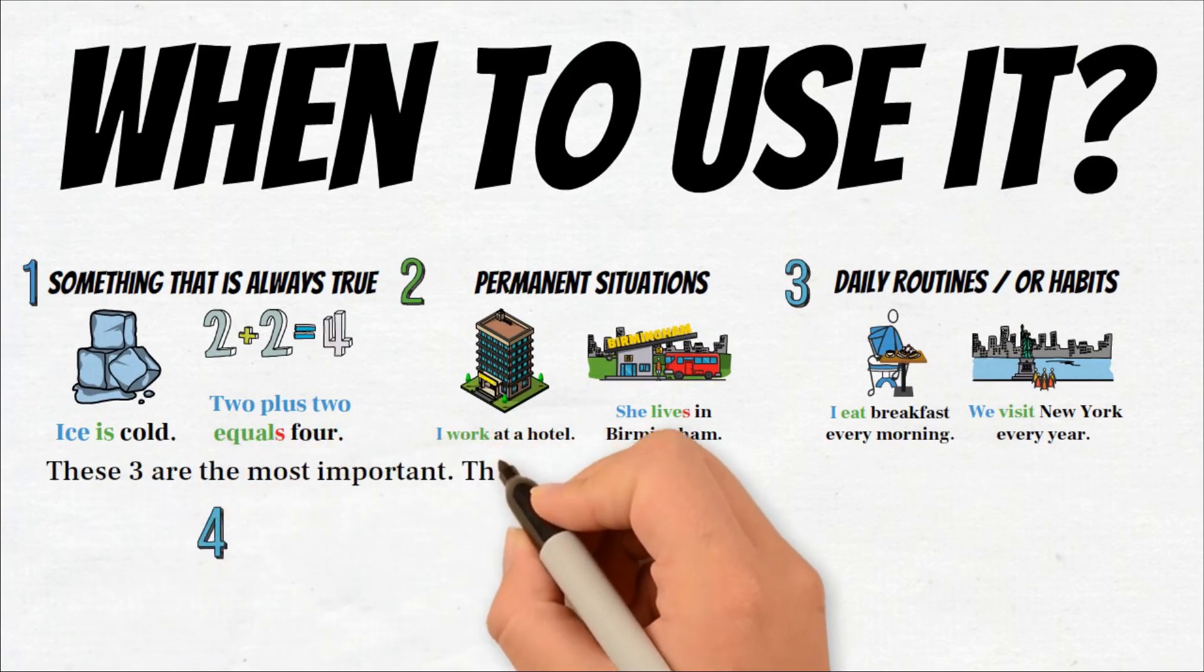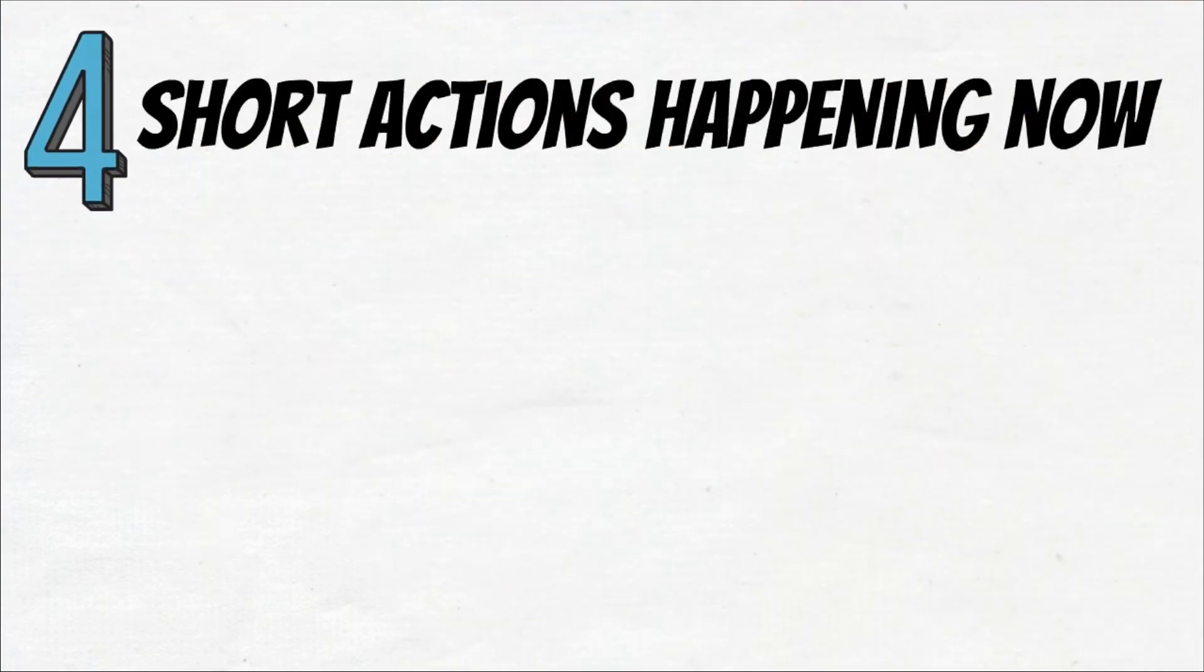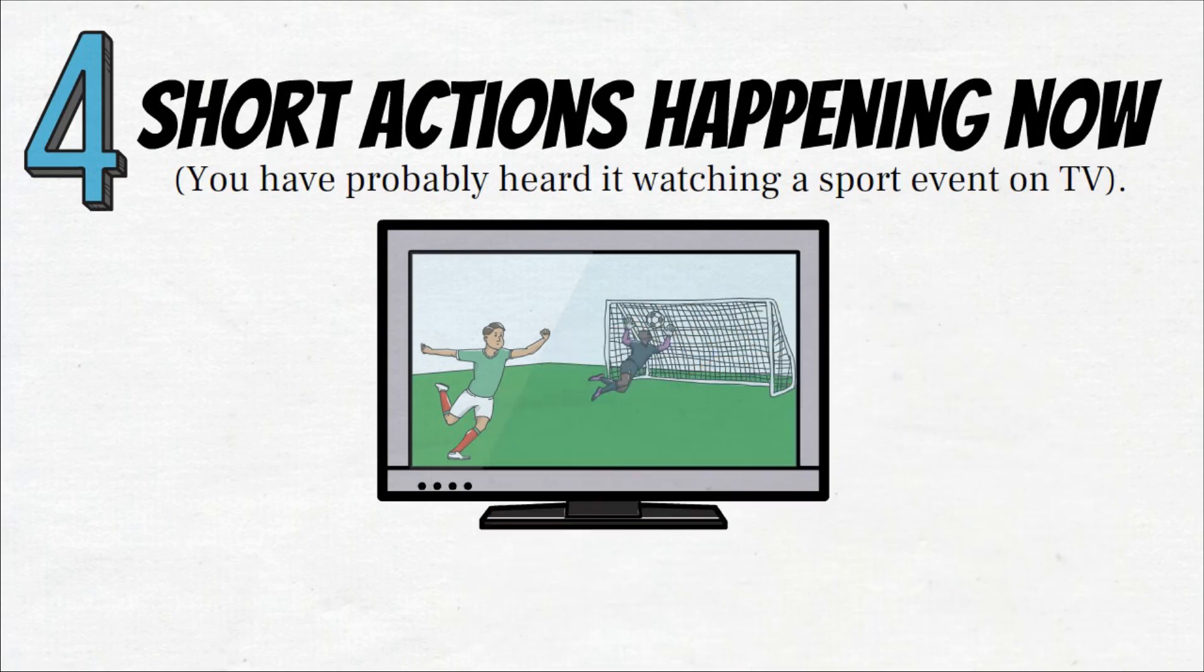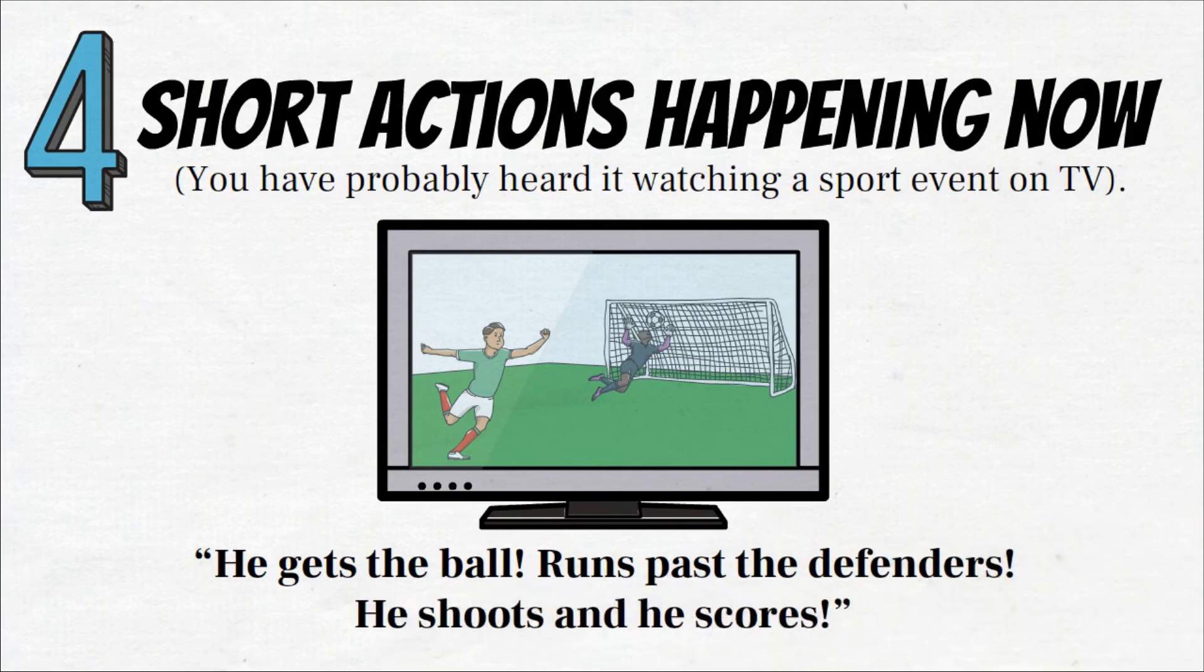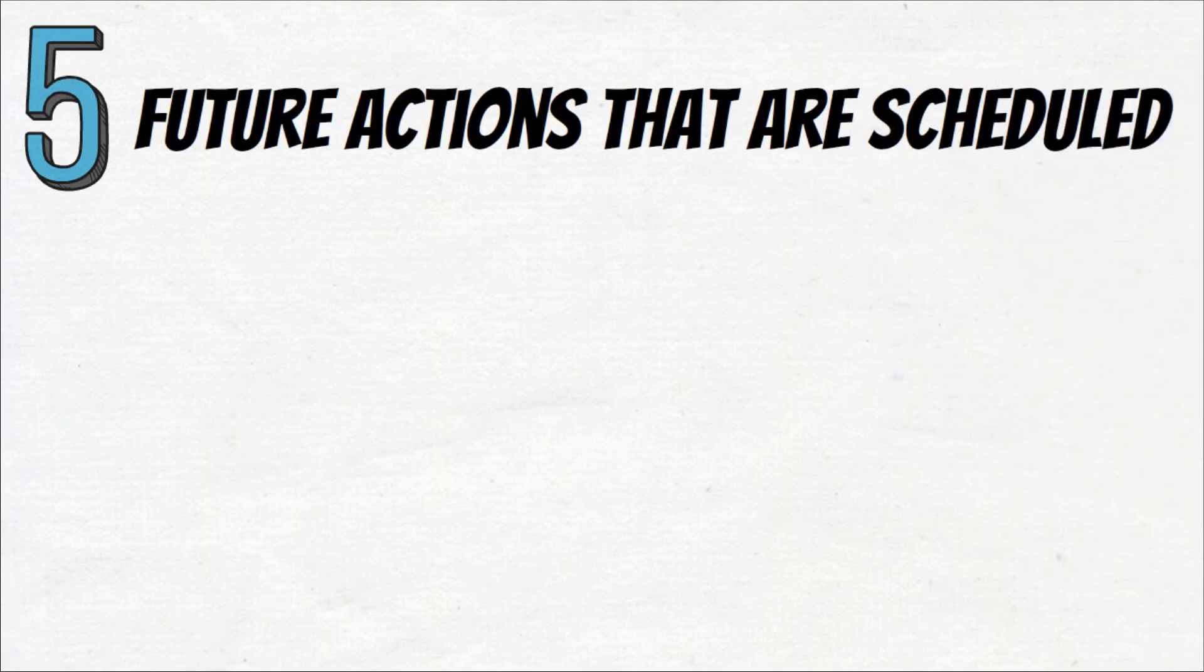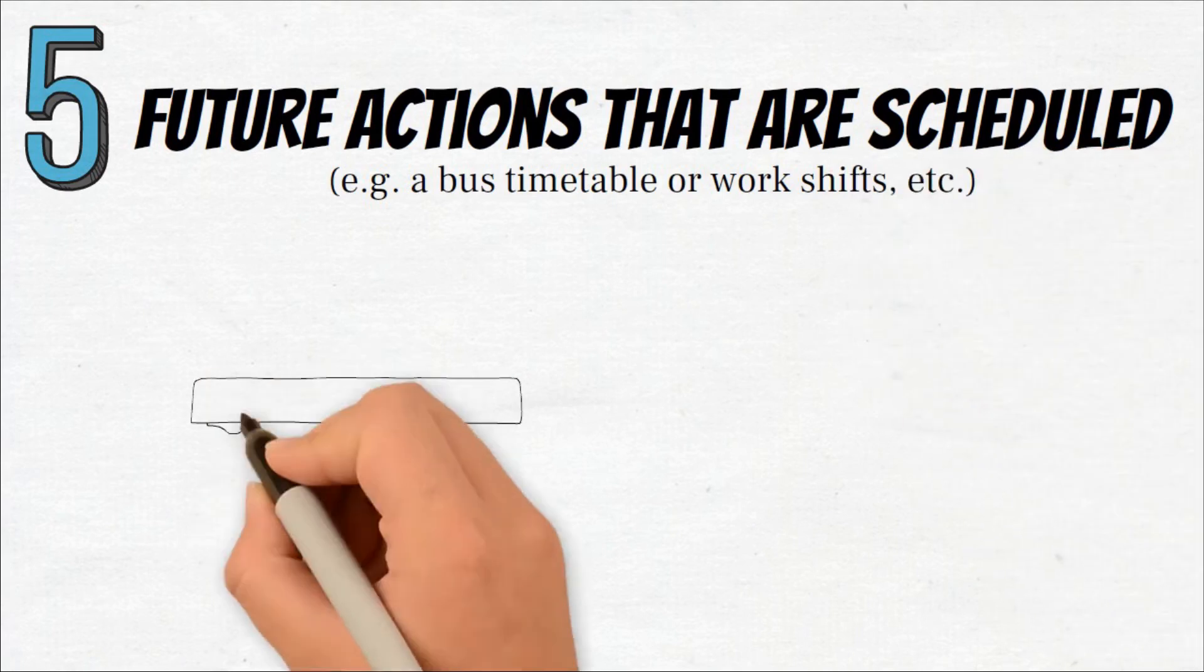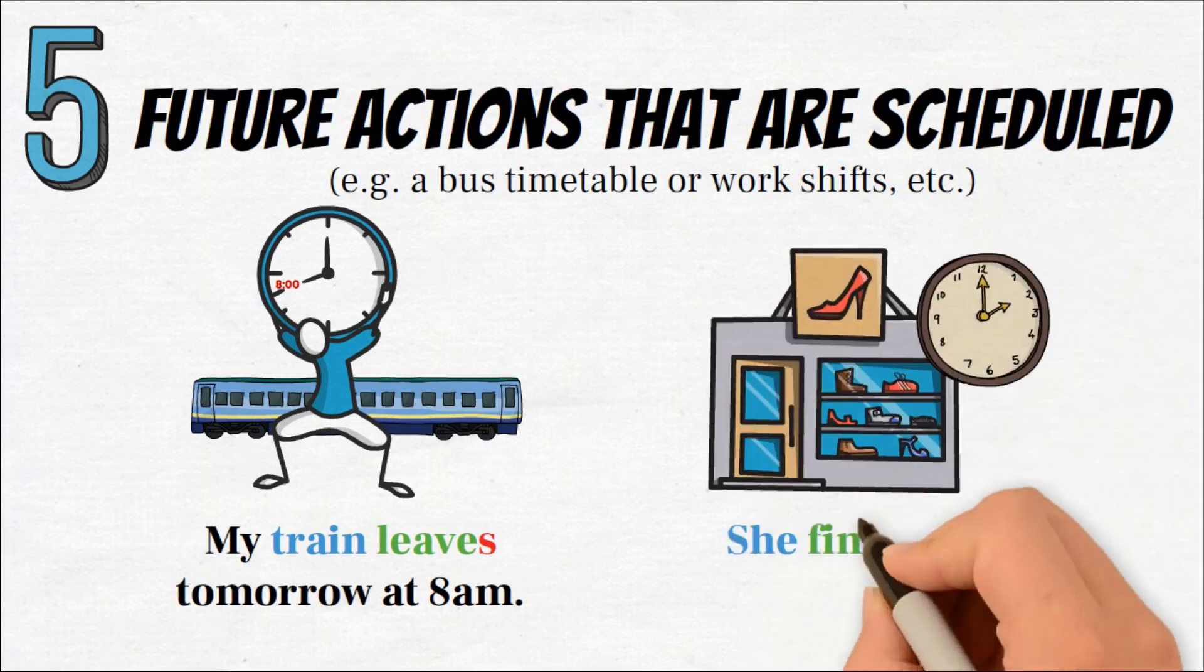Here, these three are the most important ones, but there are a few others that you will need to learn too. So here's number four: short actions happening now. You have probably heard it watching a sport event on TV. He gets the ball, runs past the defenders, he shoots, and he scores. Or number five, future actions that are scheduled, for example bus timetable or work shifts. My train leaves tomorrow at 8 a.m., or she finishes at 2 p.m. today.